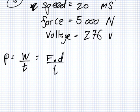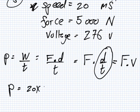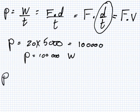So, what you can do here — this one's a little difficult. Power is work divided by time. And work is force multiplied by distance divided by time. And force multiply distance divided by time — what's distance divided by time? It's speed. So, I have force multiply speed.